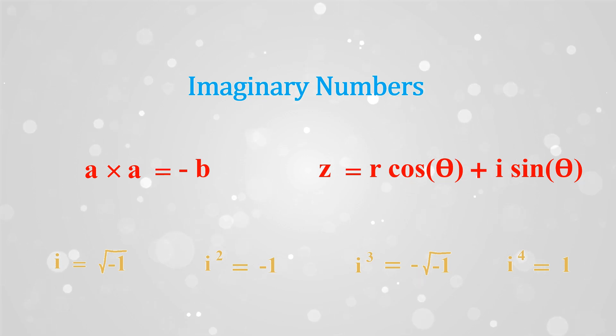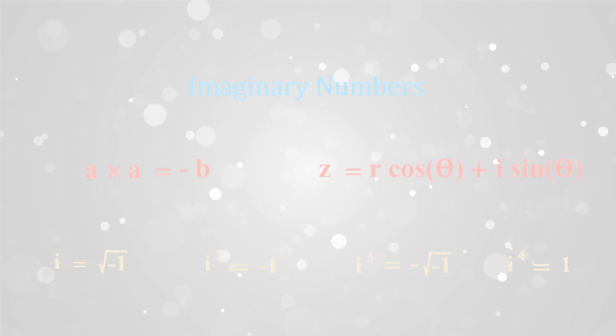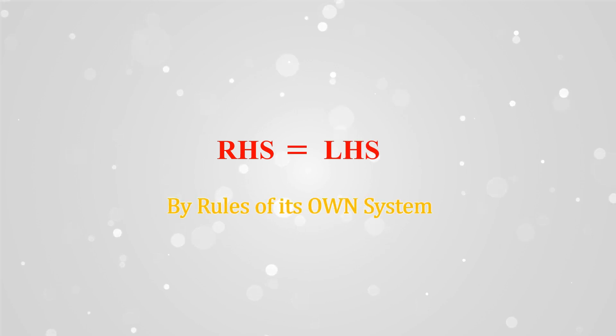So every new domain has its new rule at priority, and its unique or efficient applications are harnessed. However, irrespective of what system it is, one prime rule of mathematics has to be always followed: that is, RHS equals LHS by the rules of its own system.